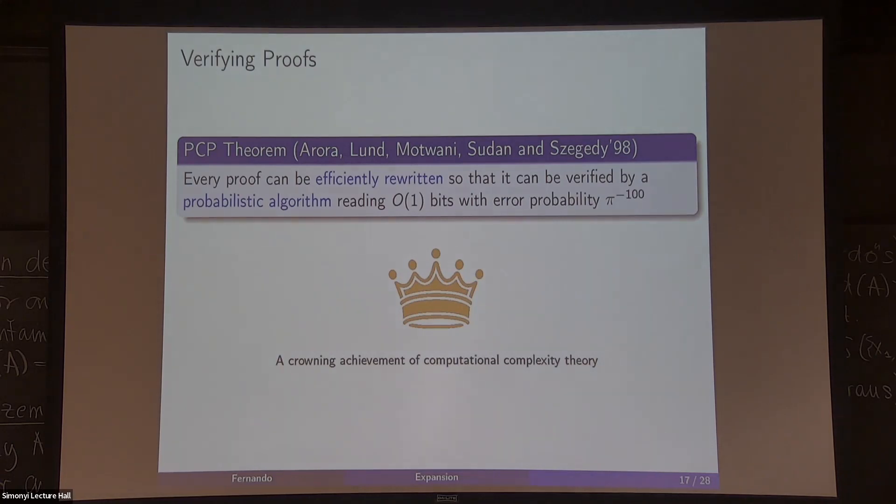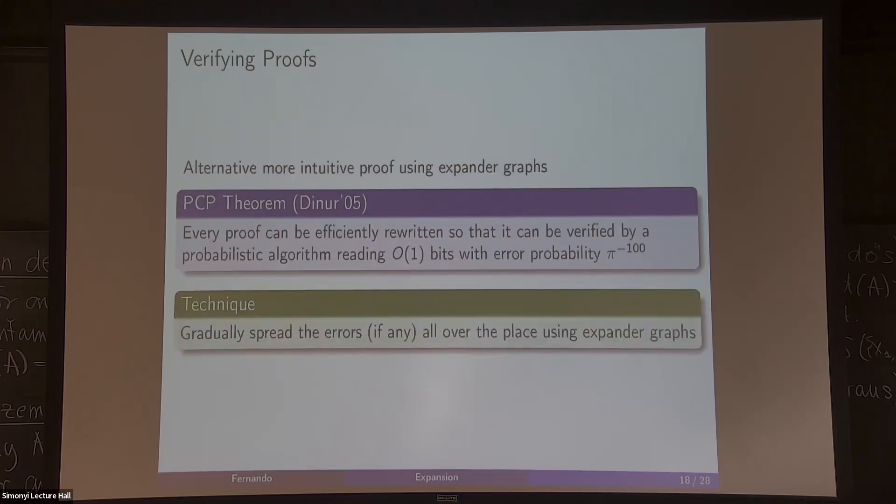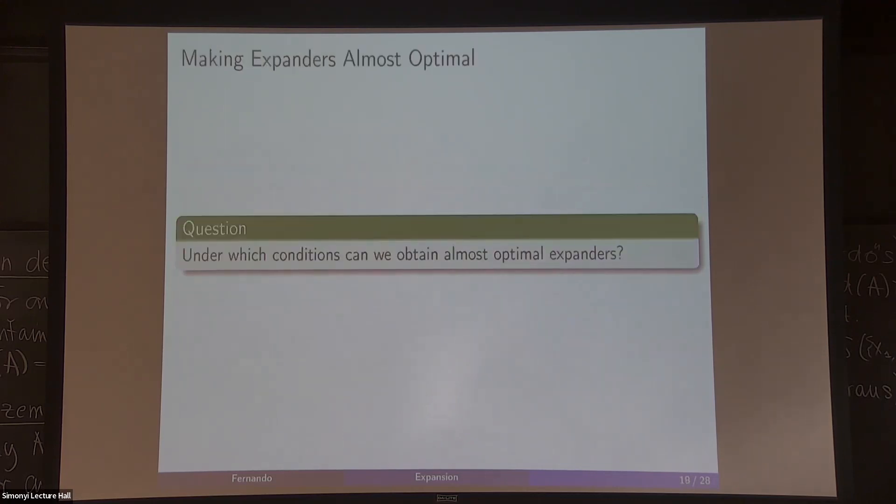If you want to understand how well we can approximate certain problems, it's related to this abstract proof guy. This is a major achievement of TCS. The proof already used expansion, but later in 2005, Dinur gave a proof that really relies on expanders, this alternative proof that's very elegant. What's going on here? If you have a proof that has some errors, the idea is that you're going to take an expander to propagate those errors. If there are errors, then you repeat, you propagate the errors gradually, gradually, gradually, and at the end of this process the errors are going to be all over the place. So no matter where you look at the end, you're going to detect the error. The key component is some sort of expander.